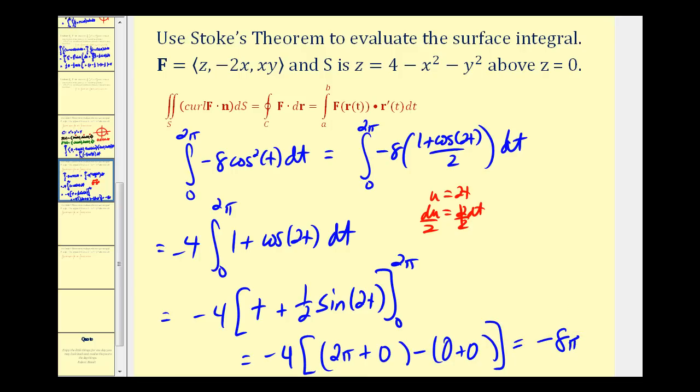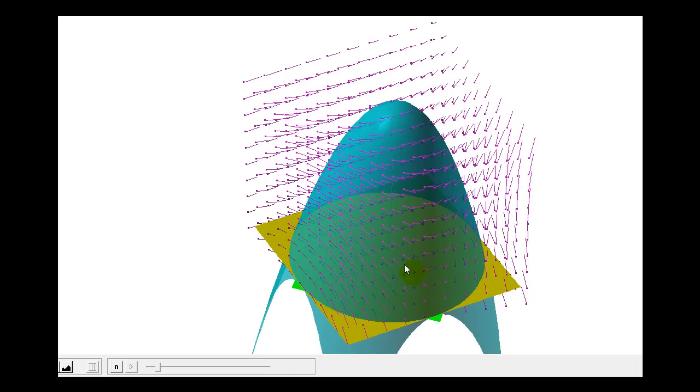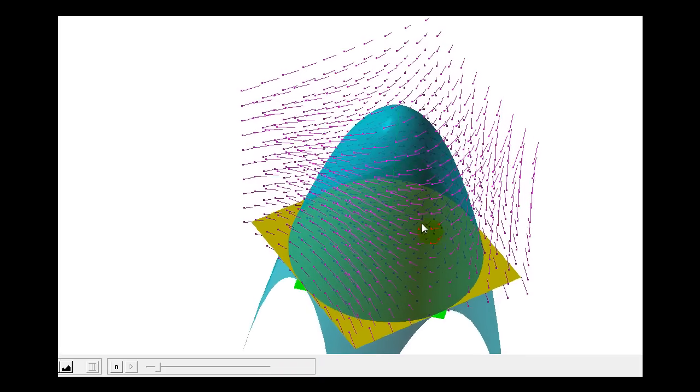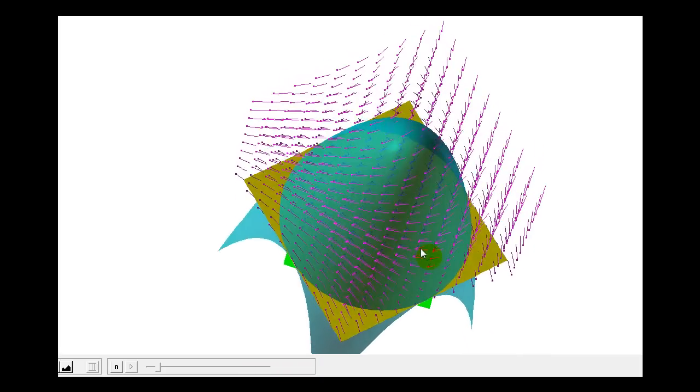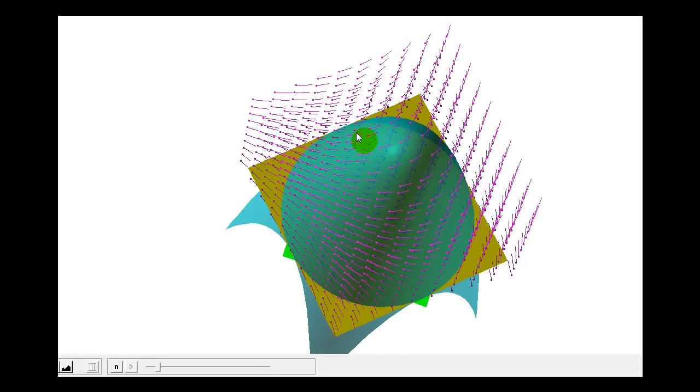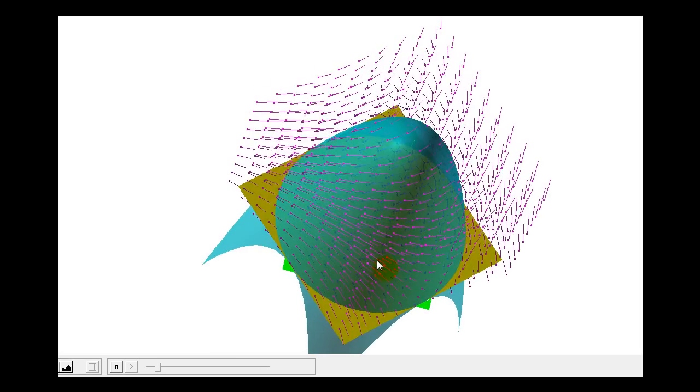So this tells us that a net rotation would be opposite of the orientation. So in this case, it looks like it should be clockwise. Let's go ahead and look. Now, it's not easy to tell, but it does look like the way this vector field is oriented, the net rotation would be clockwise in this direction. And therefore, as you can see, we had a negative value.